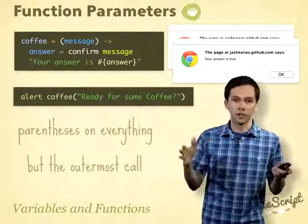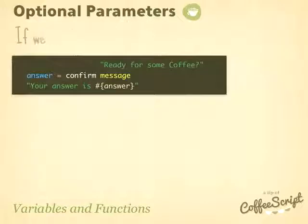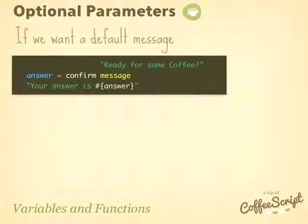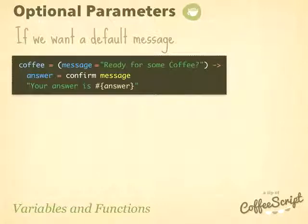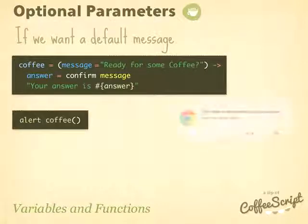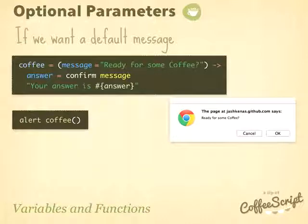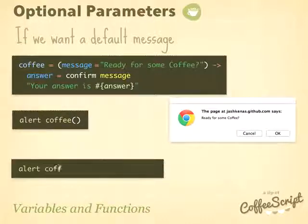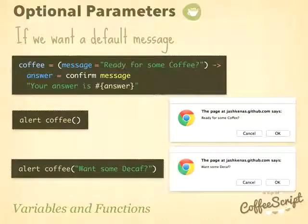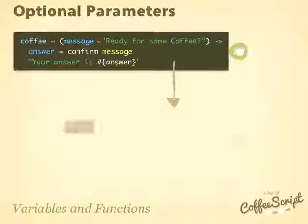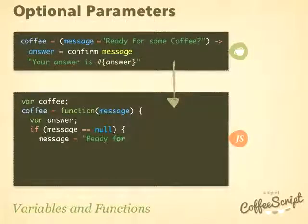One nice feature of CoffeeScript is the ability to do optional parameters. If I want an optional parameter of 'ready for some coffee' as the default message, I'd write code that looks like this. If I call the function without any parameters, it'll ask 'ready for some coffee?' If I send in a parameter, it'll override the default and ask 'want some decaf?' Here's the JavaScript that this CoffeeScript compiles into.